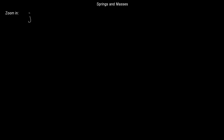Let's zoom in on this picture a little bit and look at just one of the springs to understand more about what's going on. Let me pick the jth spring — a spring in the middle, so not the very first or very last spring. This spring is going to be suspended between two masses. The top mass is going to be mass j minus one, and the bottom mass is going to be mass j.